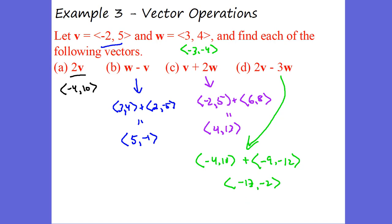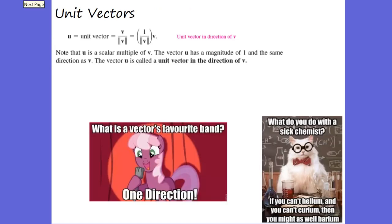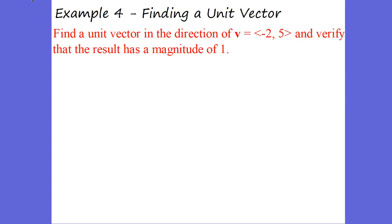Vector operations is pretty easy. We also have a thing called unit vectors. A unit vector is a scalar quantity — it is just a magnitude. So let's say vector U has a magnitude of 1 and is in the same direction as V. Vector U is called the unit vector in the direction of V. The unit vector is equal to Vector V over its magnitude.